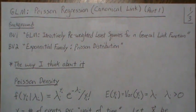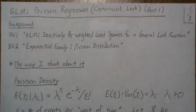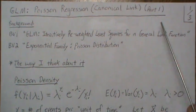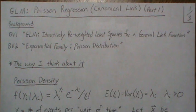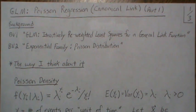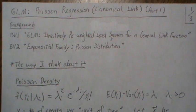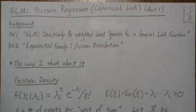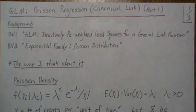Hello, in this video we're going to look at Poisson regression with the canonical link, and I'm calling this part one because the equations that we derive in this video we're going to copy exactly into R and run the iteratively reweighted least squares from scratch and then compare it with the built-in GLM function in R.